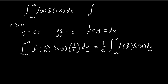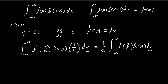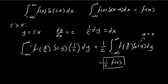Pulling the 1/c out, we get an expression that looks like this. Now I'm going to use this sifting formula — we've explained this several times before. We know that this integral is equal to f of a. In this case, a is equal to 0, so the entire integral is just going to be equal to f of 0. This is how you evaluate this integral for the case c > 0.